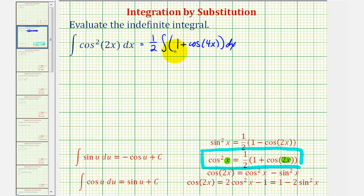And now because we'll have to perform u substitution to integrate cosine 4x, let's go ahead and write this as two separate integrals. We can write this as one-half times the quantity of the integral of one dx plus the integral of cosine 4x dx.